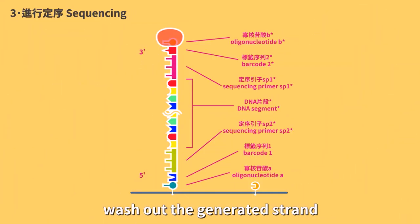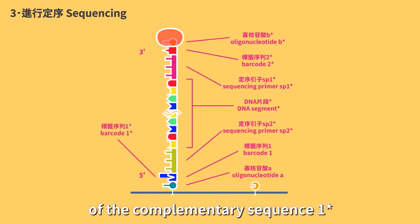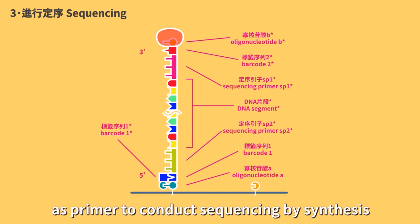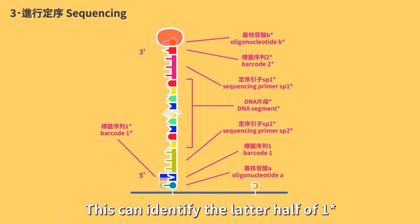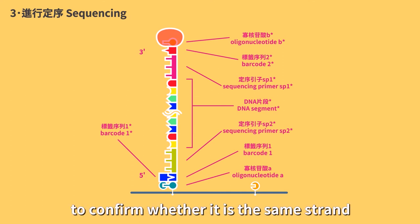Then, denature the double strand, wash out the generative strand, and add the first half of the complementary sequence 1 star of the barcode 1 at the other end as primer to conduct sequencing by synthesis. This can identify the latter half of 1 star to confirm whether it is the same strand.